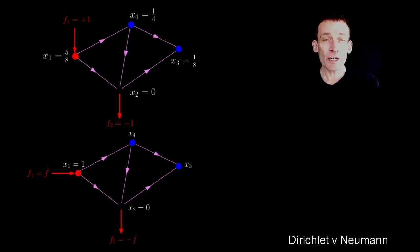You specify the values of the potentials themselves at these two boundary-point nodes 1 and 2. So look at the difference between these two pictures. In the lower problem, which I haven't solved yet, I've set the potential, I've grounded node 2 as before, and then I've set the potential at node 1 to be 1.